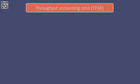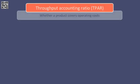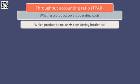The throughput accounting ratio can help us to determine whether a particular product covers operating costs and therefore makes a profit, or if it does not cover the operating costs and therefore makes a loss. We can then use this information to determine which product or products should be made given the bottleneck. There are two other ratios that need to be calculated before we can calculate the throughput accounting ratio, or TPAR.